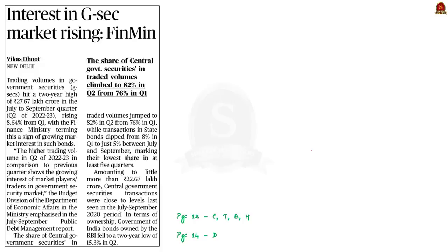Now let us take this business page article. It reports about the increase in interest on government securities. Subsequently, in terms of ownership, the government of India bonds owned by RBI fell to a two-year low of 15.3 percent. This is due to the fact that private investors are interested in buying government securities due to the increase in interest rates. This is the crux of the news article. Let us learn about government securities and its types.